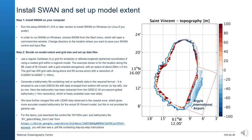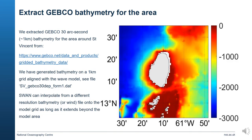Download the control file sv100m.swan and the bathymetry file from the link shown. There is also a PDF file with step-by-step instructions for the exercise. We extracted GEBCO 30 arc-second (approximately one kilometer resolution) bathymetry for the area around St. Vincent, shown here. The link to get GEBCO data is given and it is free to download. We downloaded the bathymetry on a one-kilometer grid aligned with the wave model, but SWAN can interpolate from a different resolution, so you do not need the exact same area — just ensure the bathymetry extends beyond your model domain.